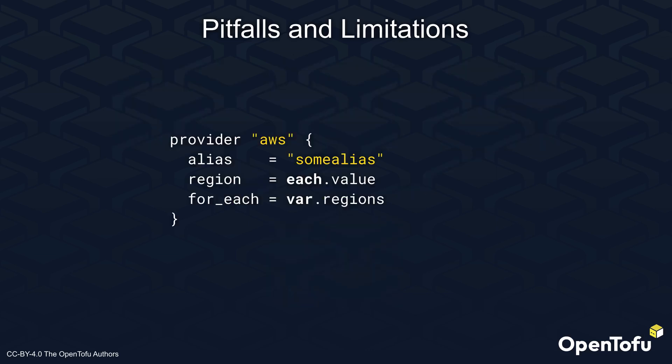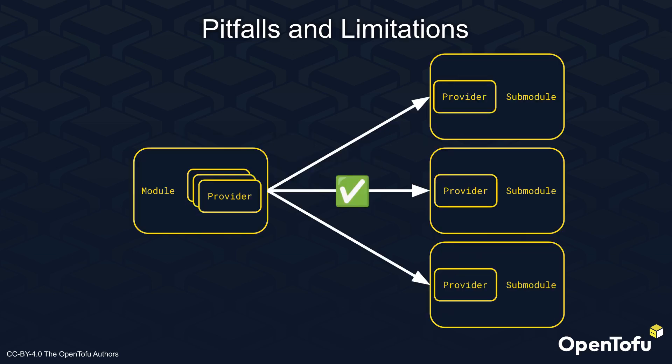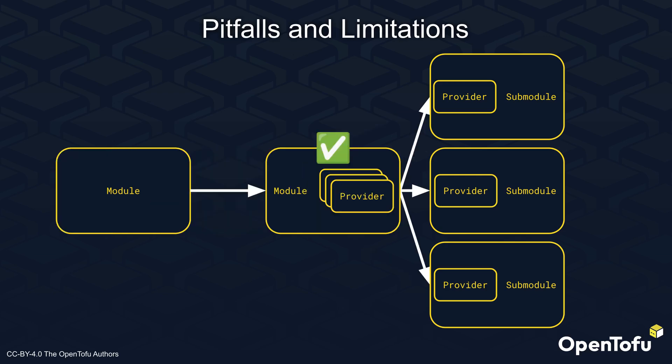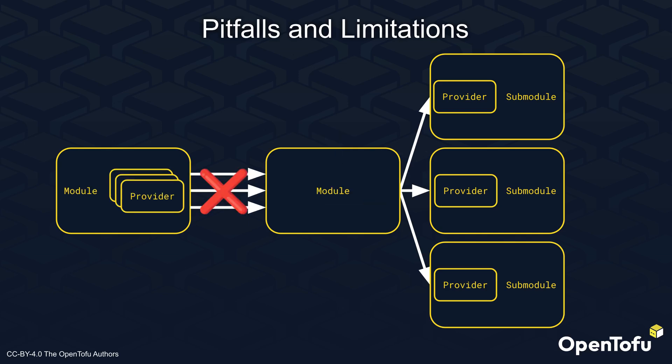The second limitation is related to the alias. Due to technical limitations, in the current version you have to use an alias for providers if you want to use a ForEach parameter. The third limitation is related to passing providers to modules. As shown in the example, you can use a set of provider instances and then use ForEach to loop over them to pass one of them to a submodule at a time. You can even create a set of provider instances in a submodule and then use ForEach to pass a provider instance to a second-level submodule. However, there is currently no way to pass a set of provider instances to a submodule as a whole for the submodule to then loop over it. In other words, the use of a provider instance set is always local to the current module.